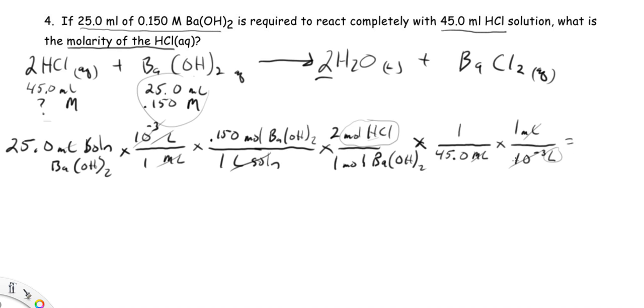Just the 10 to the minus 3. So 25 times 0.150 times 2 divided by 45.0 equals, and how many digits will we have? Well, we've got three sig figs here, three here, three here.